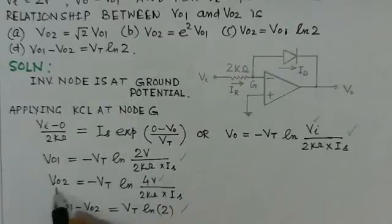Similarly, V02 is the value for input of 4 volts and we have to find the difference of that. V01 minus V02 is Vt ln 2.